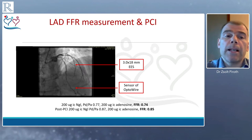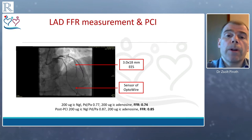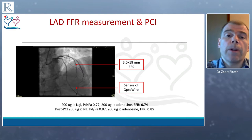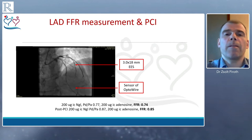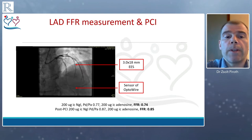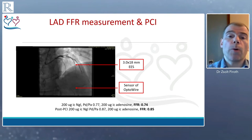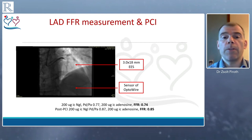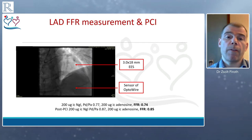Using the same wire — just like any normal workhorse wire — we placed a 3.0 by 18 mm drug-eluting stent in the LAD. Thereafter we were able to measure the post-PCI FFR, which we think is of hemodynamic importance and prognostic significance. The resting Pd/Pa ratio after PCI was 0.87, and the post-PCI FFR with 200 micrograms of IC adenosine was 0.85. So we were able to show that the LAD was indeed hemodynamically significant, treat it using the same wire without exchange, use it as a workhorse wire, and measure the post-PCI FFR.